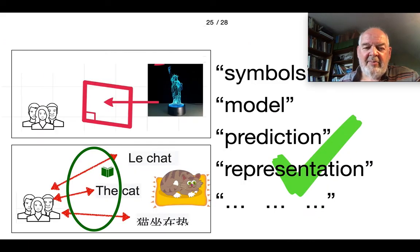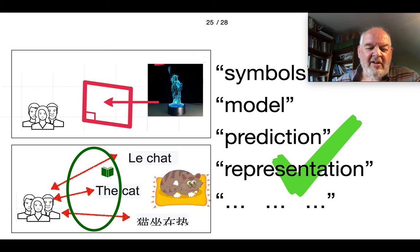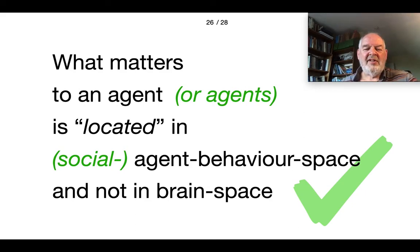This is actually not necessary at all. If you understand how agency works, things that matter to humans and agents — such as cats sitting on mats and holographic images — aren't in the brain; they are out in some virtual space. There is absolutely no need for neural networks to have some central distributed representation. The gap that matters to the sheep is not situated in the sheep's brain, but it influences its behavior. What matters to an agent is located in social agent behavior space, not in brain space.